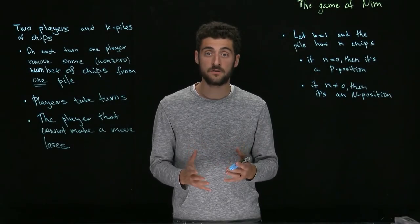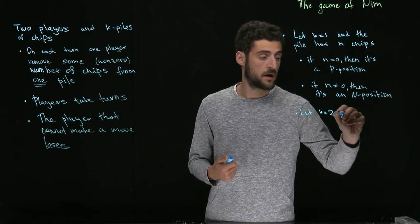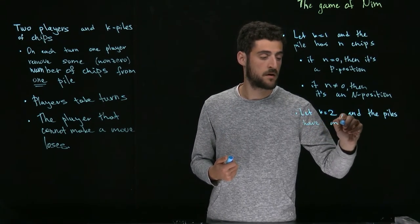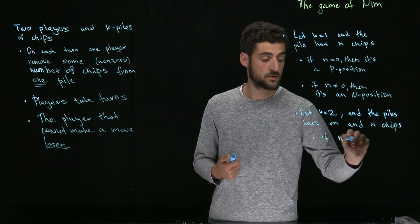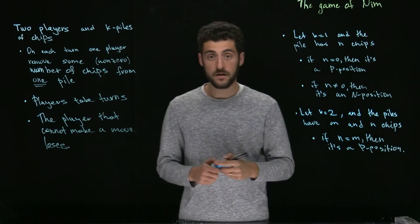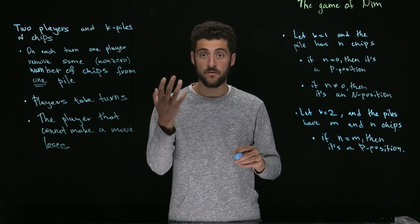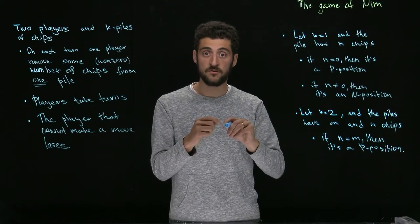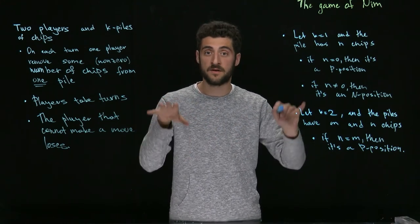Unfortunately, the case of k equal to two is already way more complicated. Let k be equal to two, and the piles have m and n chips. We claim that if n is equal to m, then it's a P position. The strategy is very simple: whenever the first player removes some number of chips from one pile, we remove the same number of chips from the other pile. The first player always makes the number of chips unequal, and we restore symmetry.